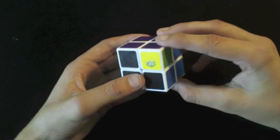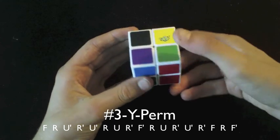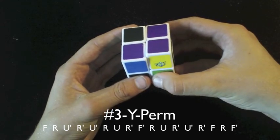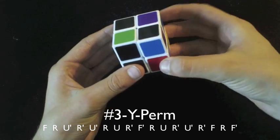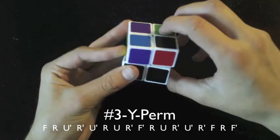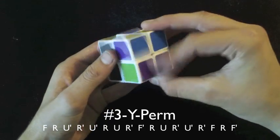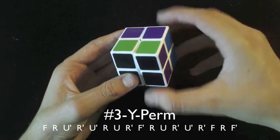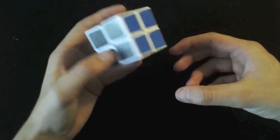What the Y perm is, if you want to know it or don't know it, is this. F, R, U prime, R prime, U prime, R, U, R prime, F prime, R prime, F, R, F prime. And as you can see, it's finished the cube.